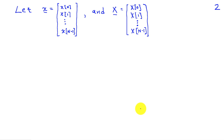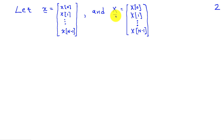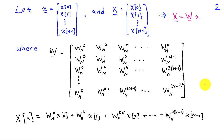In general, we define vector x (lowercase, with underscore) as a column vector with capital N elements: x0, x1 through xN minus 1. We also define vector capital X (with underscore) containing the capital N values of the DFT coefficients. Using this notation, the DFT coefficients capital X can be written as the product of a matrix W times the vector of time samples lowercase x. The elements of W are assembled from the W sub N terms appearing in the DFT expression for arbitrary N.